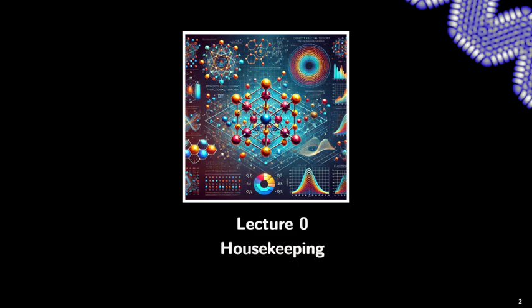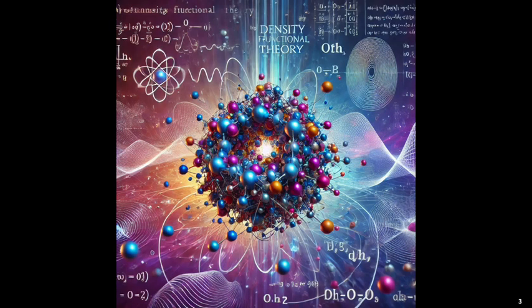So what does density functional theory do? Here you probably recognize one of the images that can be generated by one of our favorite generative AI tools. Basically, density functional theory calculates density of states, density of electrons, and observables from that.